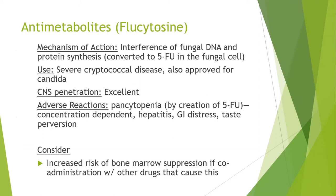Flucytosine is used specifically in the treatment of cryptococcal disease and is also approved for candida. It is taken up by fungal cells via cytosine permease and inhibits fungal DNA/RNA synthesis by creating intermediates that act as inhibitors. It interferes with protein synthesis after conversion to 5-FU intracellularly. It has excellent CNS penetration and is used in severe cryptococcal disease. Key concerns include pancytopenia as a concentration-dependent effect, hepatitis, GI distress, and taste perversion.